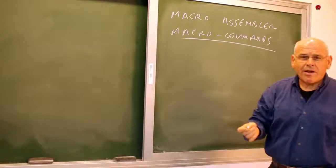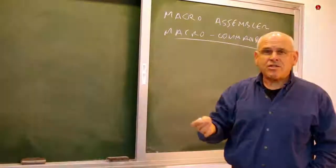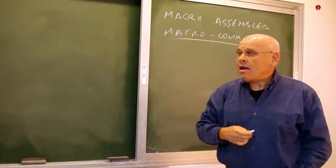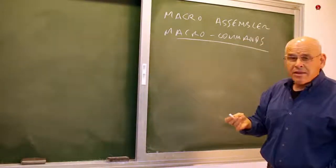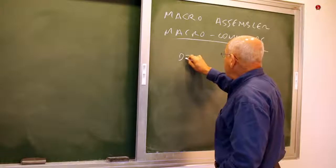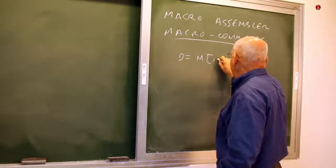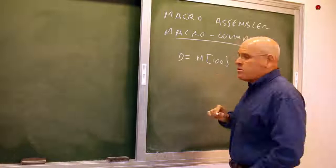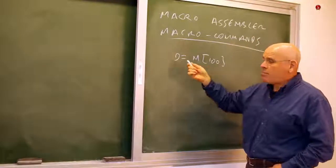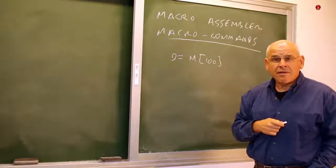Let's take a typical operation like loading the D register with a value of some memory register. It is quite natural to think about a command that looks like this: D equals M at 100, which means go to register number 100, take its contents, and put it in the D register. This would be a natural thing to write.